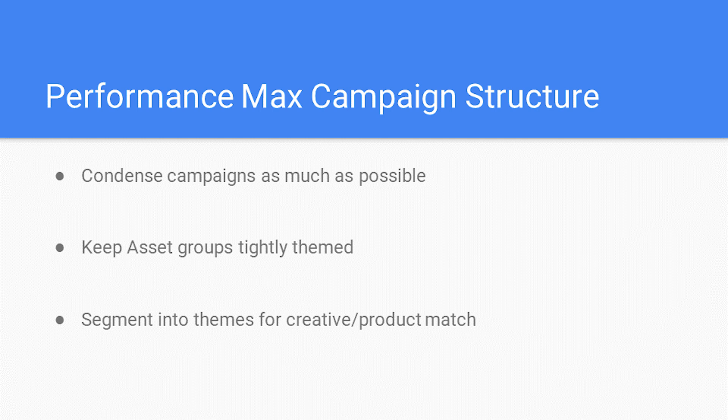Let's talk about exclusions. First, you have customer exclusions — we recommend uploading your customer list and having the system exclude them all from targeting. This is useful if you want to focus on new customer acquisition, which is, in our opinion, what you should measure the success of Pmax campaigns on. Next, there are keywords — if you have a Google rep, they can block branded search terms from Pmax for you. There are also audience signals, which are different from audience targeting. The system uses these as a signal to find your ideal prospective customer, but it won't limit you to a specific audience the way traditional targeting would — this can be a good thing or a bad thing, so keep an eye out.